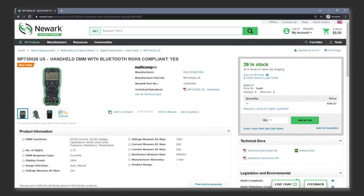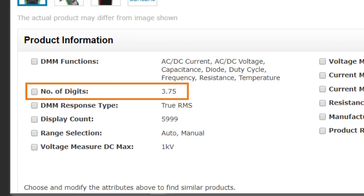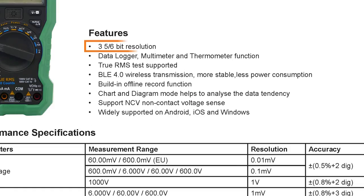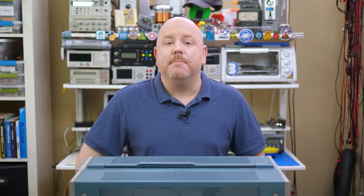Newark's website classifies this meter as a 3.75 digit. However, the datasheet says 3 and 5 eighths. Confusing, right? Well, the good news is you can look at something else that gets specified to understand how the display works, and that is the maximum counts.